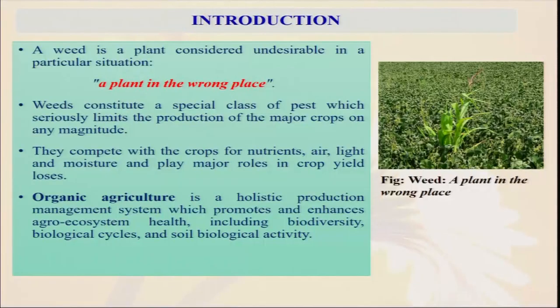In organic farming we cannot use any artificial or factory-made products, just like fertilizer or herbicides. Herbicides in India play a very definite role by controlling weeds very cheaply, but there are some repercussions — some toxicity effects on soil quality — and in organic farming we cannot use any type of such farmicides. So let us look at the definition of weed. There may be different types of definitions. A simple definition: a weed is a plant considered undesirable in a particular situation — any plant that is out of place and out of time.